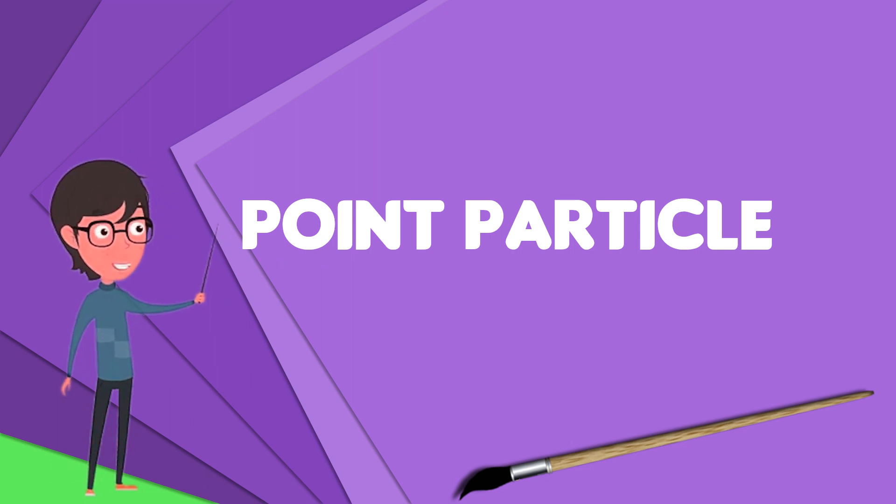In the theory of gravity, physicists often discuss a point mass, meaning a point particle with a non-zero mass and no other properties or structure. Likewise, in electromagnetism, physicists discuss a point charge, a point particle with a non-zero charge.